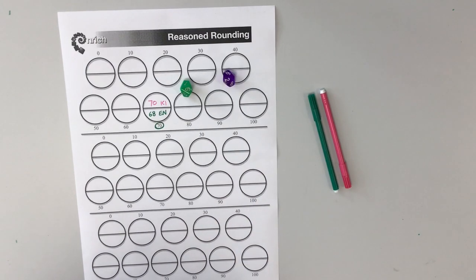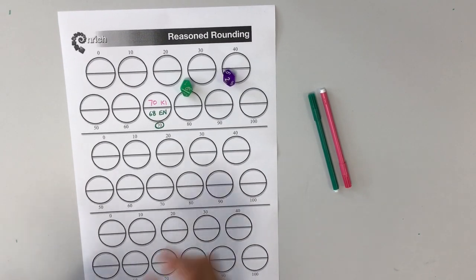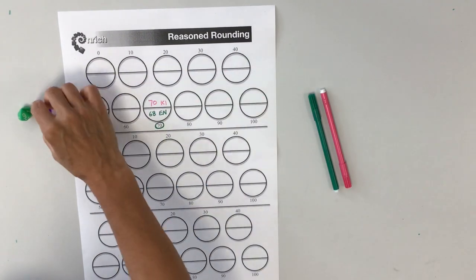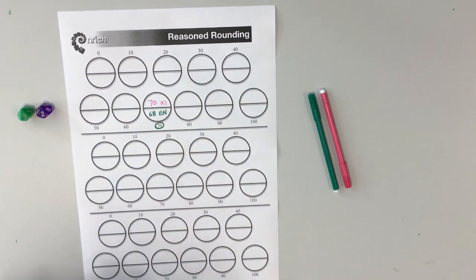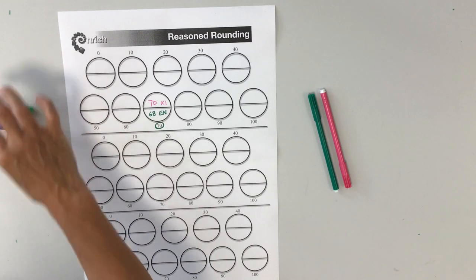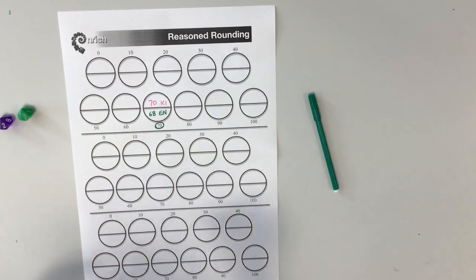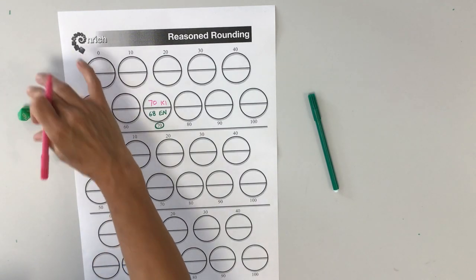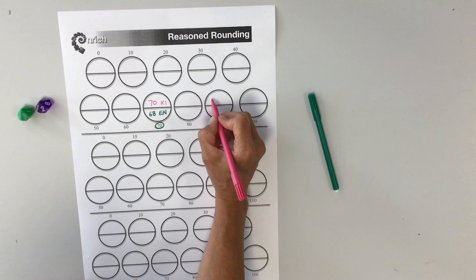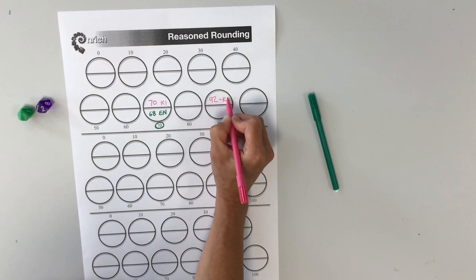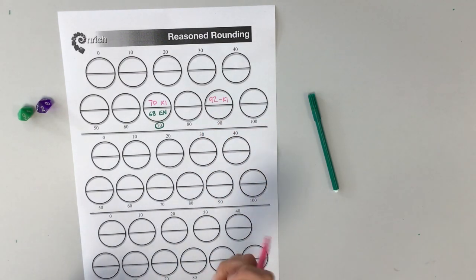And I'm going to circle that in my color to show that I have won that circle. So it's my turn. And I have rolled a 2 and a 9. So I can use this as 92 or 29. So I am going to use this as 92.